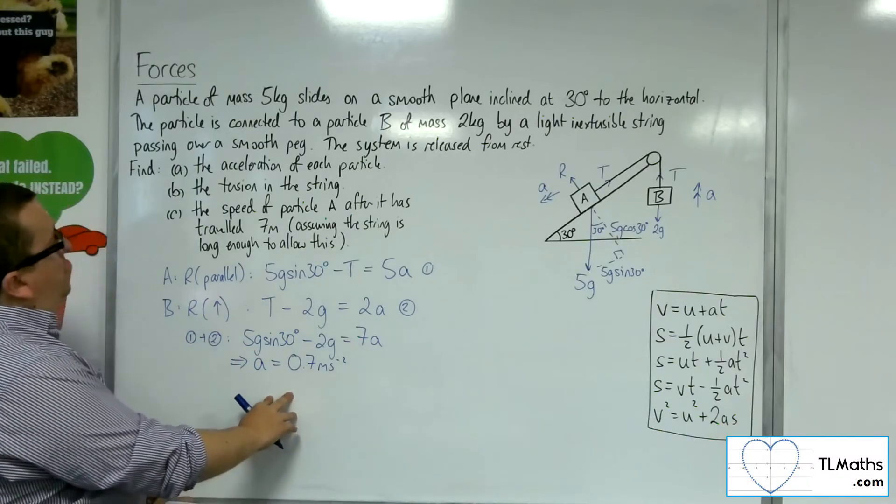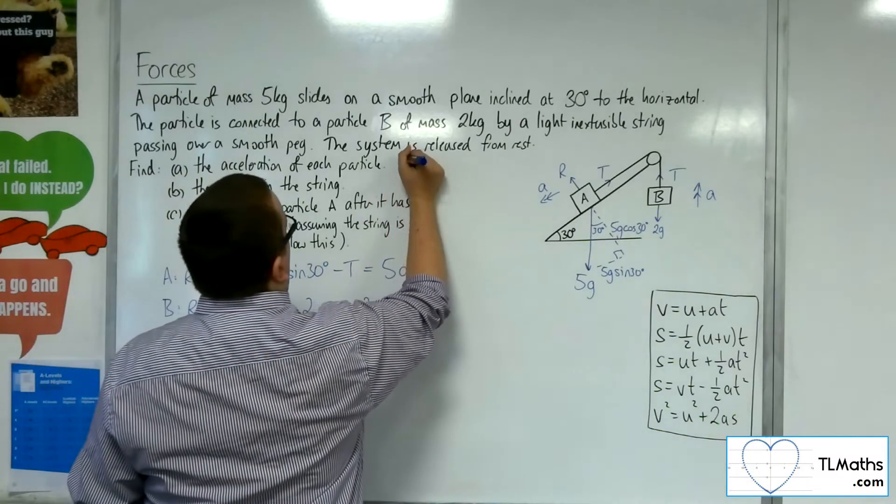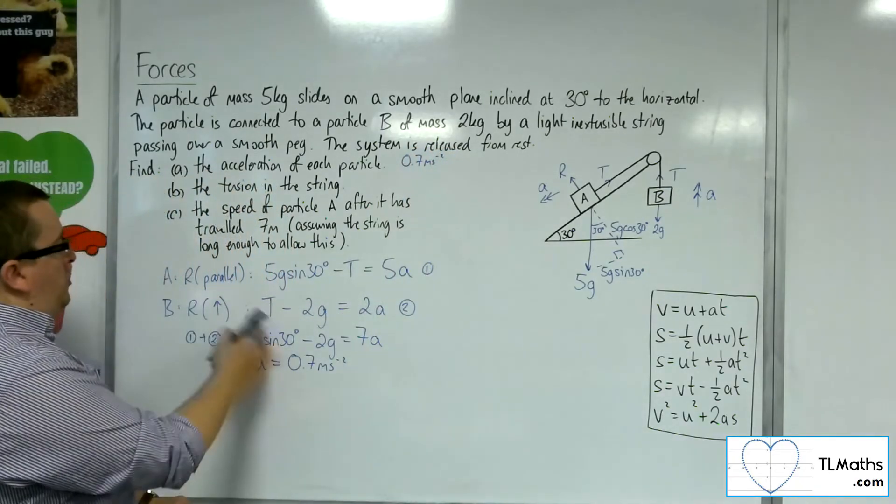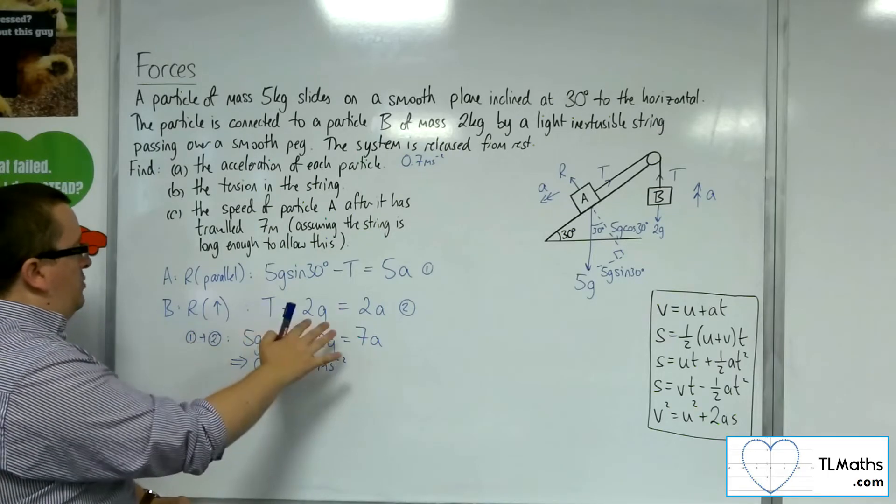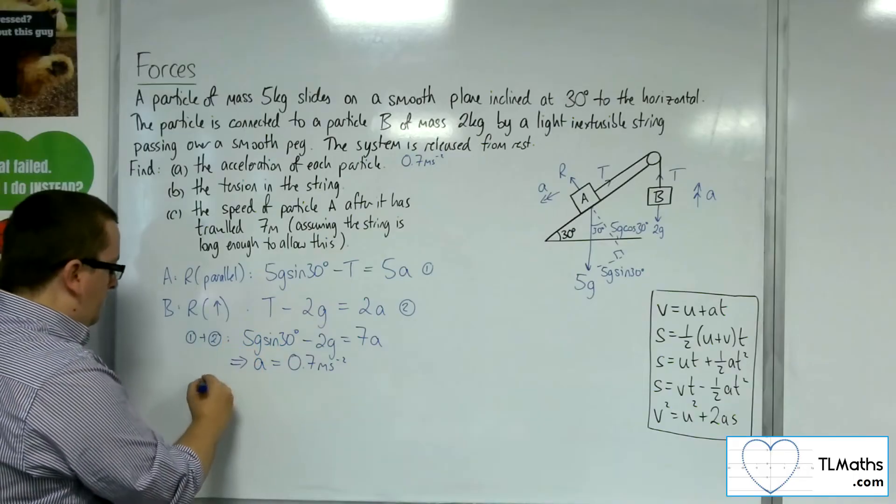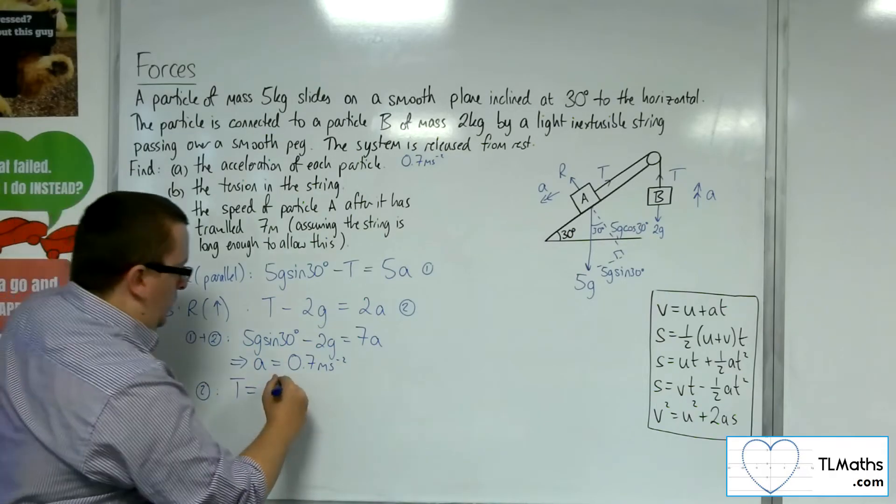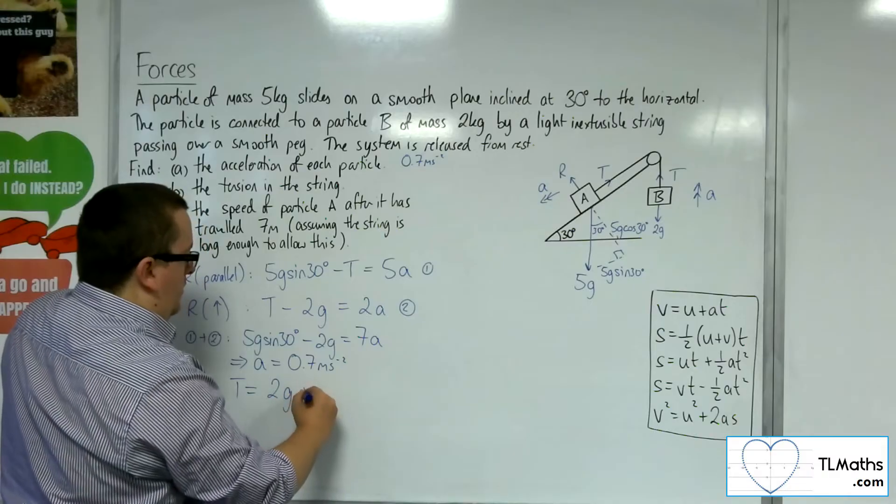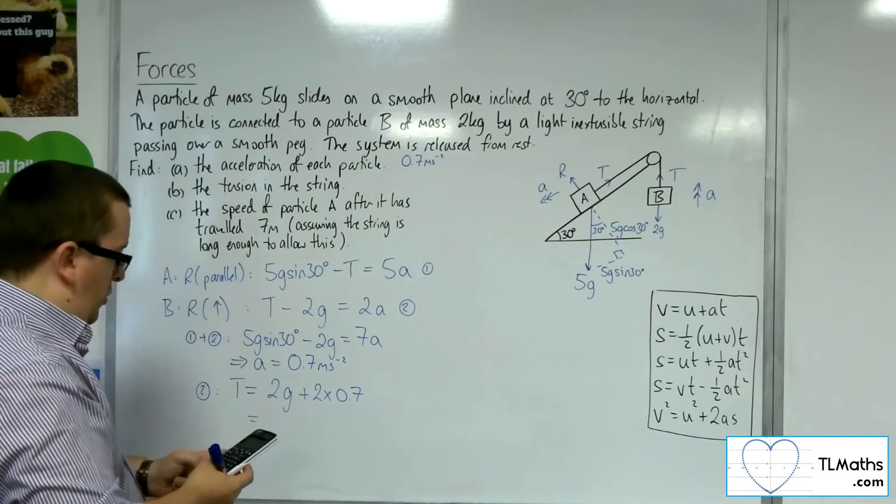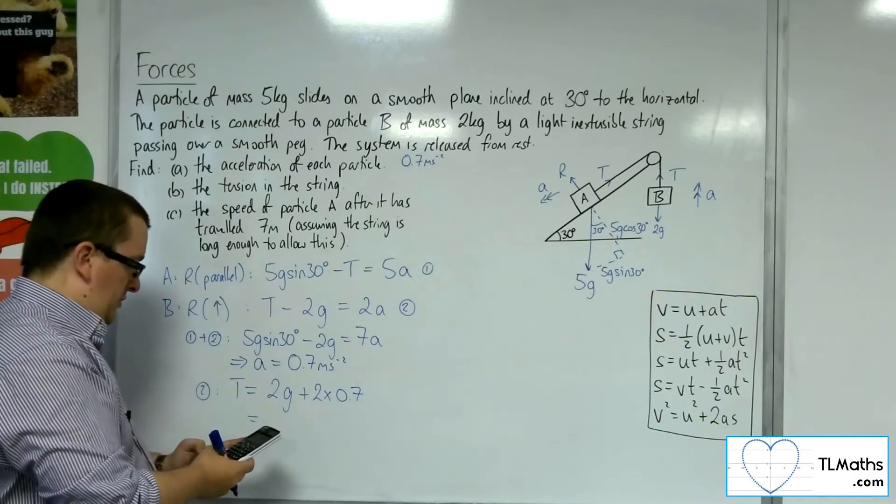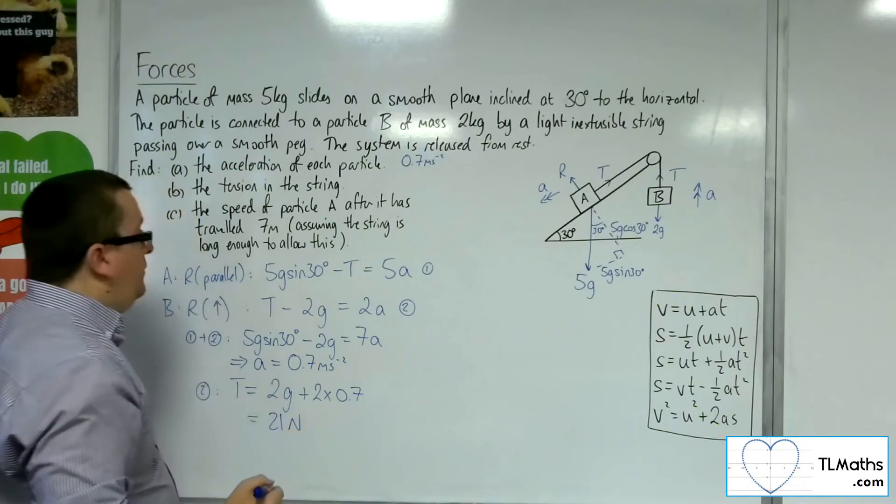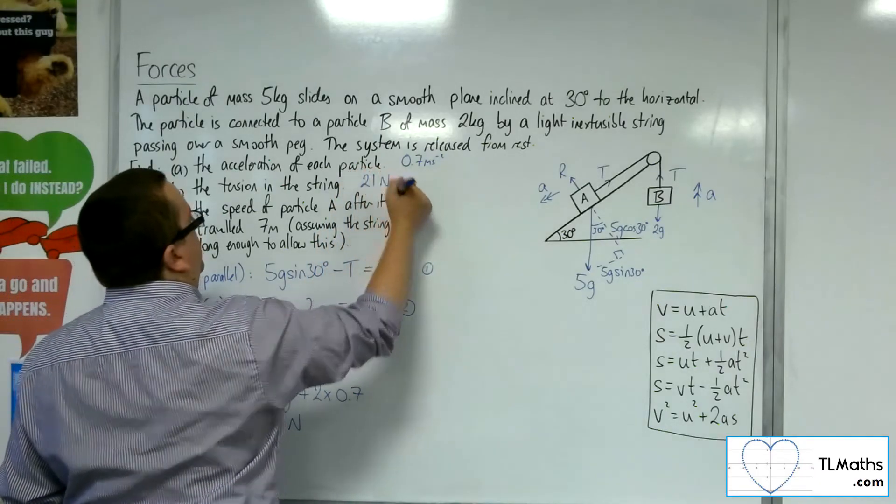Now, with the acceleration found, so that's the 0.7, I can then find the tension in the string by substituting back into one of the two equations. So if I substitute back into B, or number 2 rather, then the tension is equal to 2 lots of G plus 2 lots of A. So 2 lots of 9.8 plus 2 lots of 0.7 gets me 21. So the tension is 21 newtons.